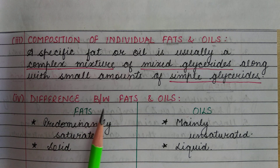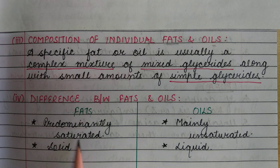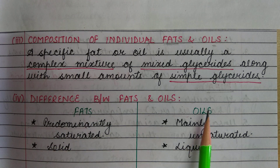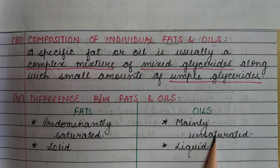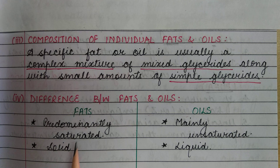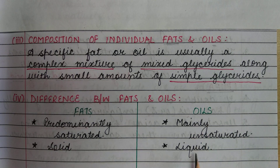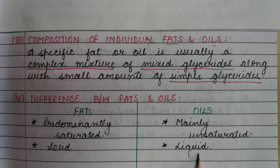The difference between fats and oils: fats are predominantly saturated, meaning they are mainly saturated compounds. Oils are mainly unsaturated, meaning they contain double or triple bonds. Fats are solid, while oils are liquid.